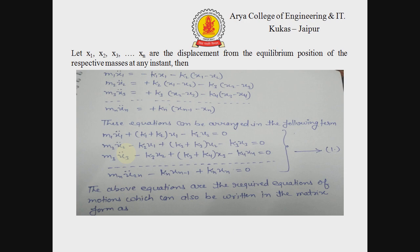Here x1, x2, x3, and xn are the displacements from the equilibrium position of the respective masses at that instant. The equations of motion are as follows: m1*x1̈ + (k1 + k2)*x1 - k2*x2 = 0, and so on for each mass. These are the equations of motion for each element of the system.